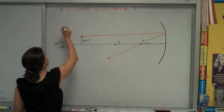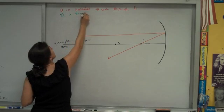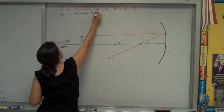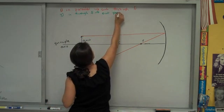So rule number two, if light goes in through f, after it reflects off the mirror, it's going to come out parallel to the principal axis.